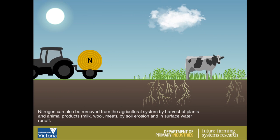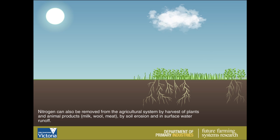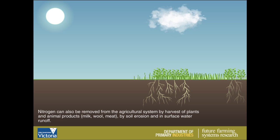Nitrogen can also be removed from the agricultural system by harvest of plants and animal products, by soil erosion and in surface water runoff.